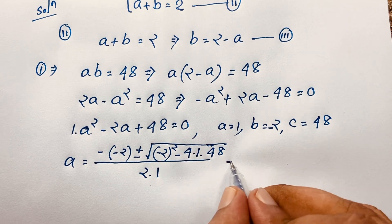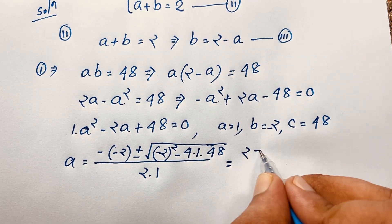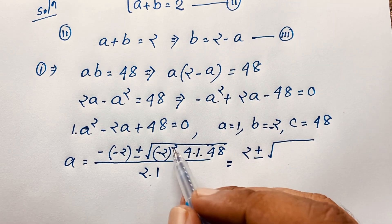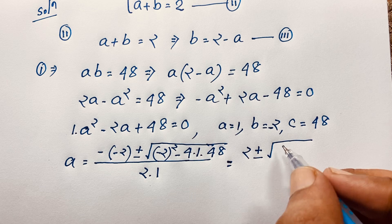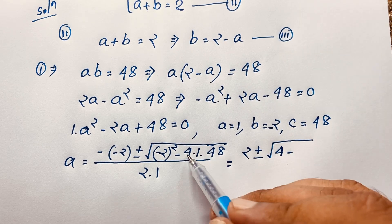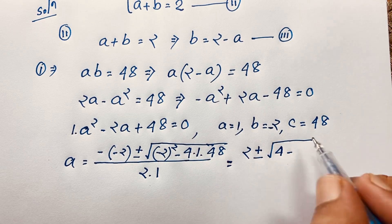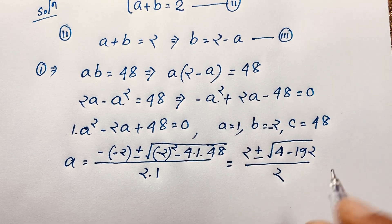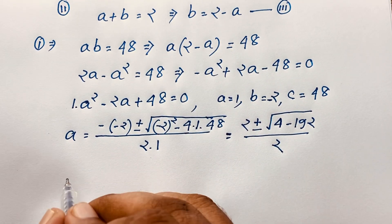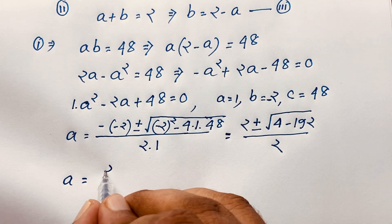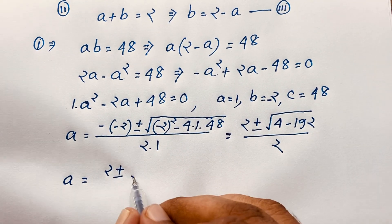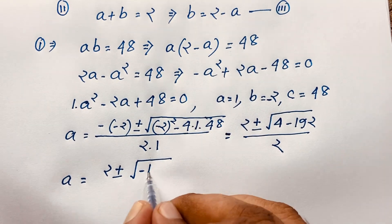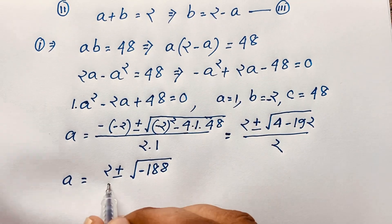This gives us: minus minus becomes positive 2, plus or minus square root of (negative 2) squared — since the power is an even number, it is always positive, giving 4 — minus 4 times 48 which is 192, over 2 times 1 which is 2. So a equals 2 plus or minus square root of 192 minus 4, giving 2 plus or minus square root of negative 188, over 2.